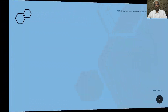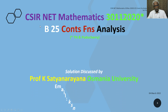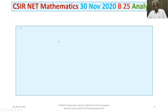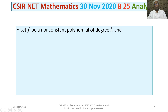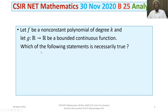We will now discuss the solution of a problem from the section analysis. The problem is based on the properties of continuous functions. This question appeared in the CSIR National Eligibility Test held on 30th November 2020, section B. The problem is: let F be a non-constant polynomial of degree K, and let G be a function from R to R — the set of all real numbers — be a bounded continuous function. Which of the following statements is necessarily true?